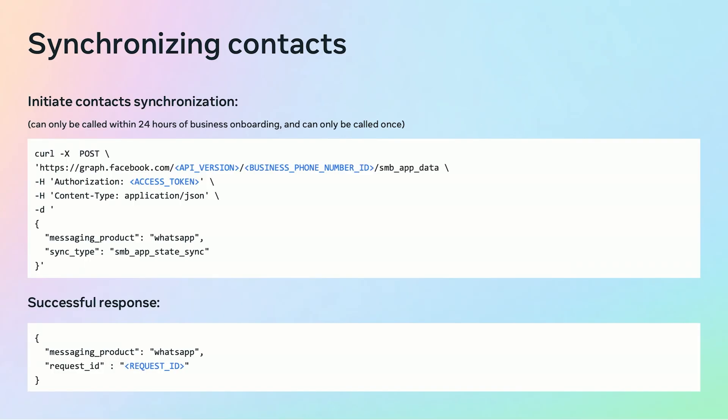Following successful onboarding, you must initiate the synchronization of contacts and chat history within a 24-hour window. This requires two separate initiation requests, one for contacts and another for chat history. Please note that each request type can only be made once. To synchronize contacts, make a Graph API request to the SMB app data endpoint and set the sync type to SMB app state sync. Upon a successful request, you will receive a response containing the request ID. The actual synchronization will be sent via webhooks shown on the next slide.